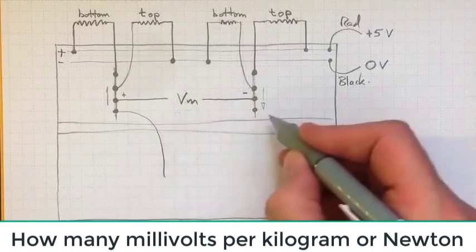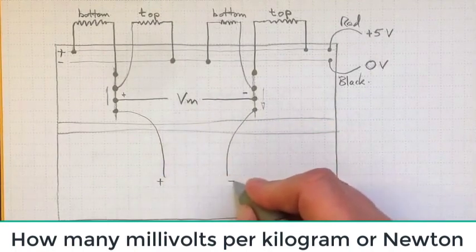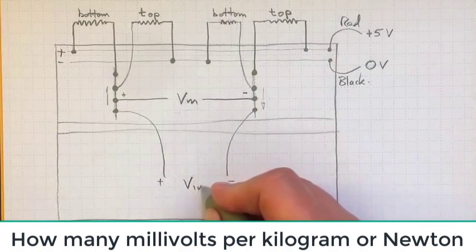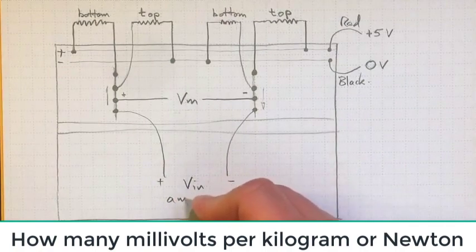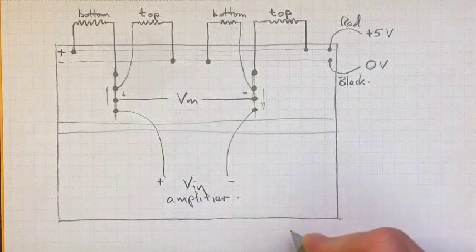We'll need to take that output voltage and have that be the positive and negative input voltages for an amplifier if we're going to get a reasonably sized signal out.